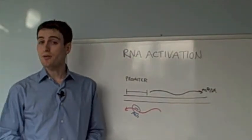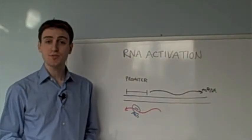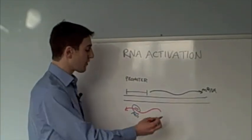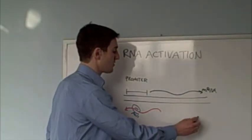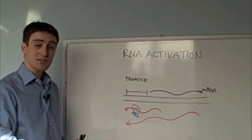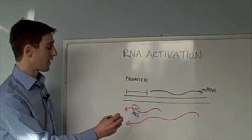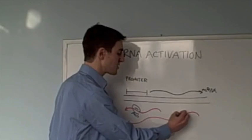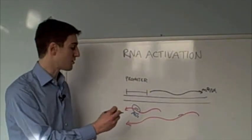In the second model that I present, proposed by Kevin Morris from the Scripps Research Institute, he thinks again that we've got an antisense non-coding RNA. But when he targets the non-coding RNA, he actually targets a downstream site, not in the immediate vicinity of the promoter.